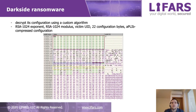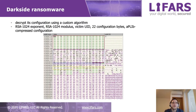The encrypted configuration of the malware will be decrypted using a custom algorithm. This result will contain the RSA exponent, RSA modulus, victim UID, 22 configuration bytes, and the second configuration that is compressed.